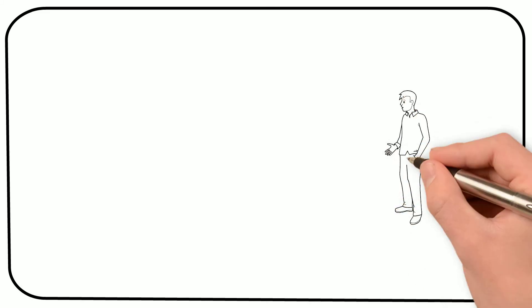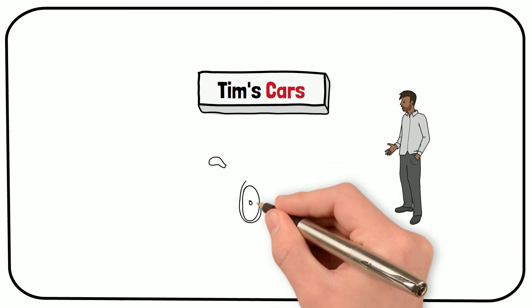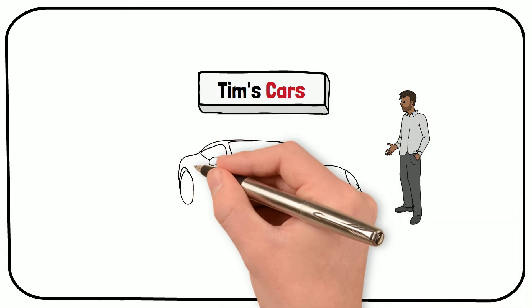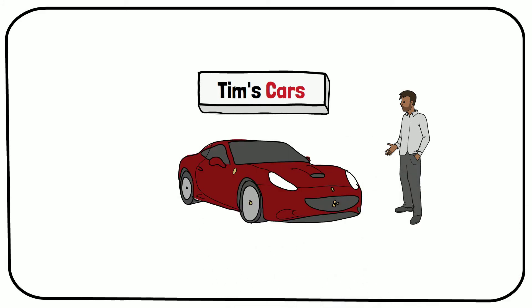Let's see how they connect with an example. Say a guy named Tim starts a car company and calls it Tim's Cars. It's the end of Tim's Cars' second year of operations, so they already have financial statements from the first year and now the current year. Tim's Cars is a new and small company, so it only sells one car in the whole year.